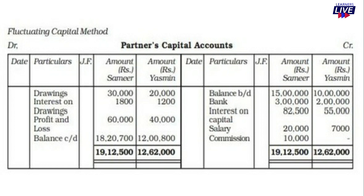That goes on the credit side. Drawings are on the debit side: Samir Rs. 30,000, Yasmin Rs. 20,000. Interest on drawings is also on the debit side: Rs. 1,800 and Rs. 1,200. Salary is on the credit side: Samir Rs. 20,000, Yasmin Rs. 7,000. Commission: Samir Rs. 10,000. Share in loss also recorded.